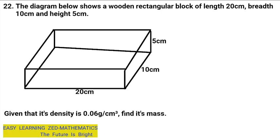Question 22 was as follows: the diagram below shows a wooden rectangular block of length 20 cm, breadth 10 cm, and height 5 cm. The block being described is the one drawn here. Given that its density is 0.06 grams per centimeter cubed, find its mass.